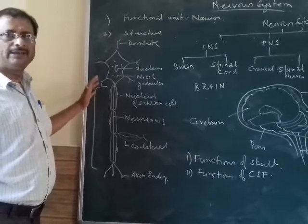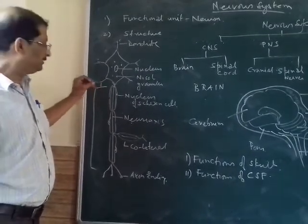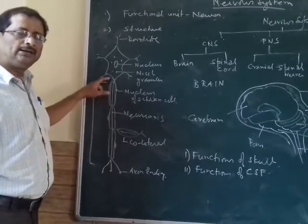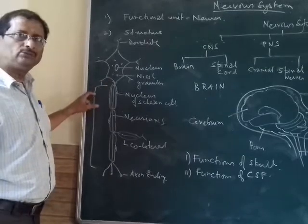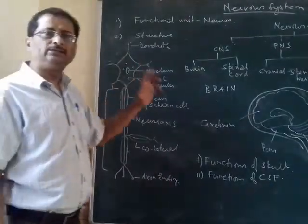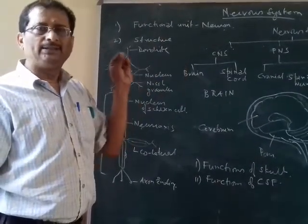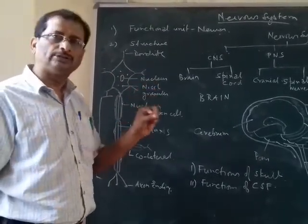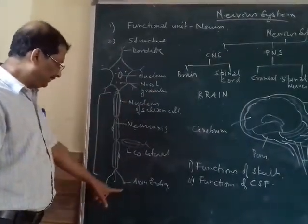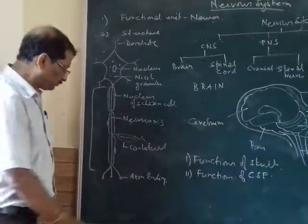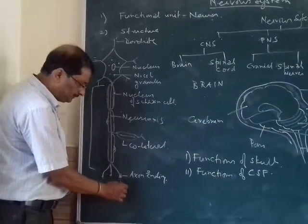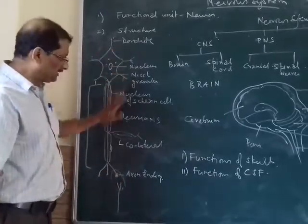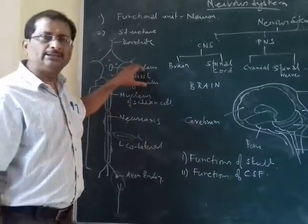The transmission in Myelinated Nerve Fibers or Neurons is faster than in Non-myelinated Neurons. Here you have the Nucleus of the Schwann cells. These gaps are called the Nodes of Ranvier. Usually, the impulse travels with saltatory conduction, jumping through the Nodes of Ranvier. The movement is always from the Cyton to the Axon — this is a unidirectional movement. And this is called the Terminal Arborization, where this portion is called the Synaptic Knob. They may form a Synapse with the Dendrite of another Neuron. Neurons are said to be one of the longest cells in the human body.